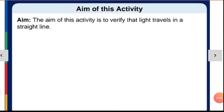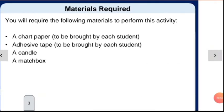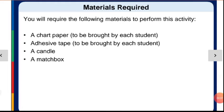We know theoretically that light always travels in a straight line. If the line is curved, light will not be visible. Let's prove it.